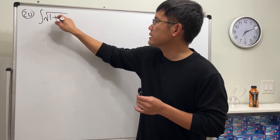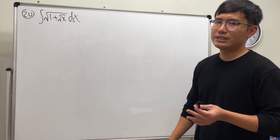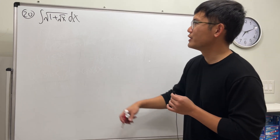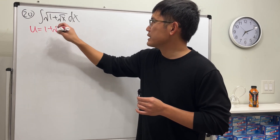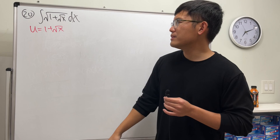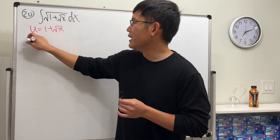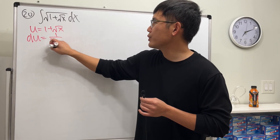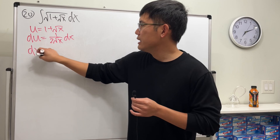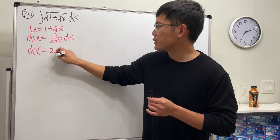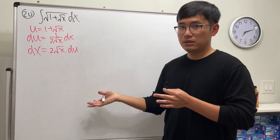The integral is the square root of 1 plus another square root of x. Why don't we just u-substitute and hope for the best? Let u equal 1 plus square root of x. To get dx, differentiate: du equals 1 over 2 square root of x dx, and then dx equals 2 square root of x du.